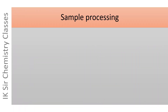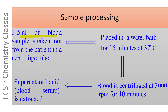Sample processing for the extraction of blood serum. 3 to 5 ml blood sample is taken from the patient and placed in a centrifuge tube. This centrifuge tube is placed in a water bath for 15 minutes at 37 degrees centigrade, and then the blood sample is centrifuged at 3000 rpm for 10 minutes. As a result, a clear liquid comes above, which is called the supernatant liquid. It is extracted and it is nothing but blood serum.